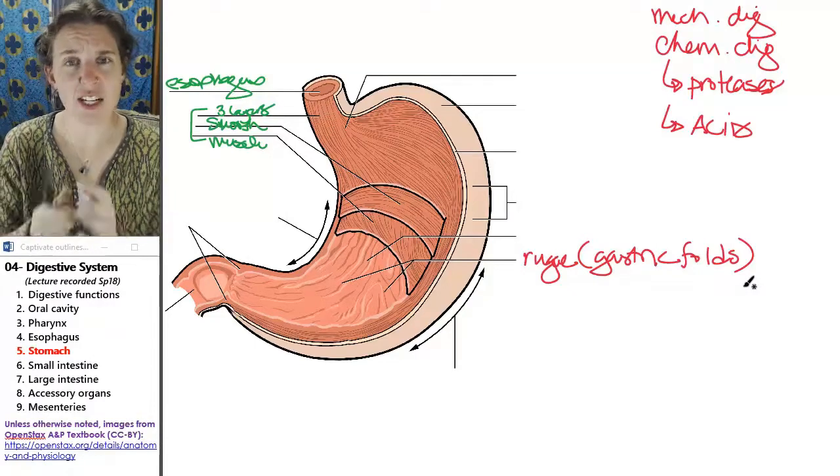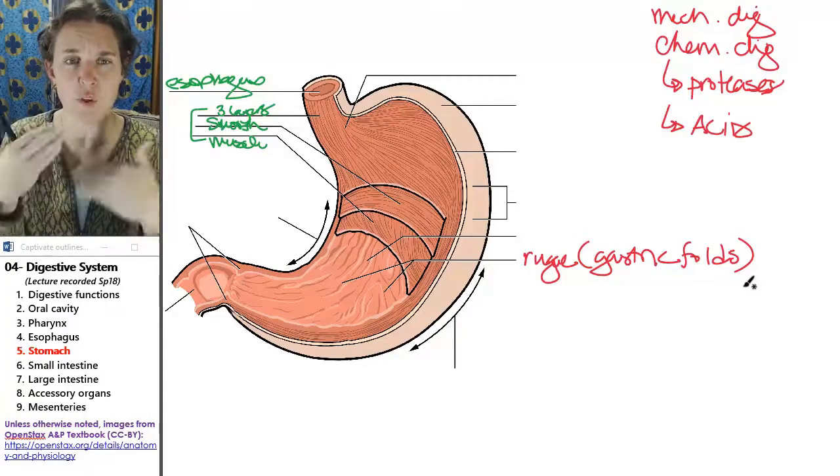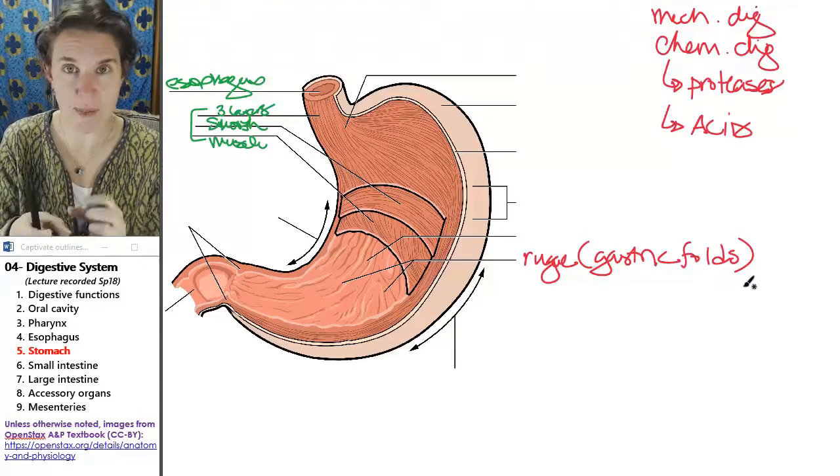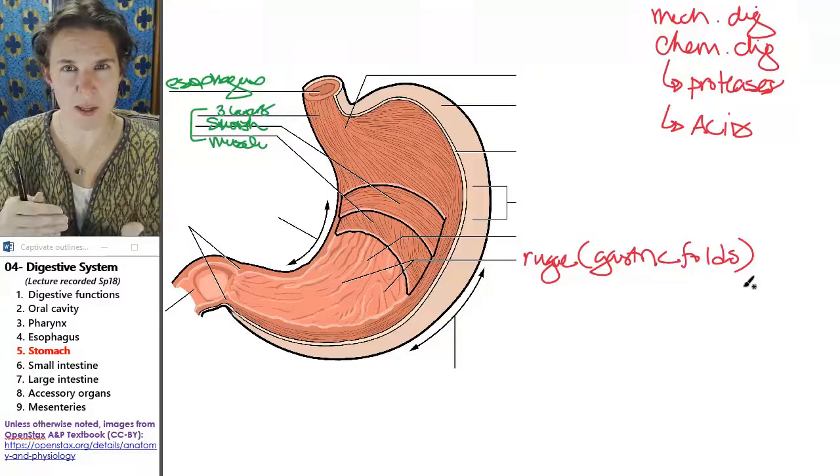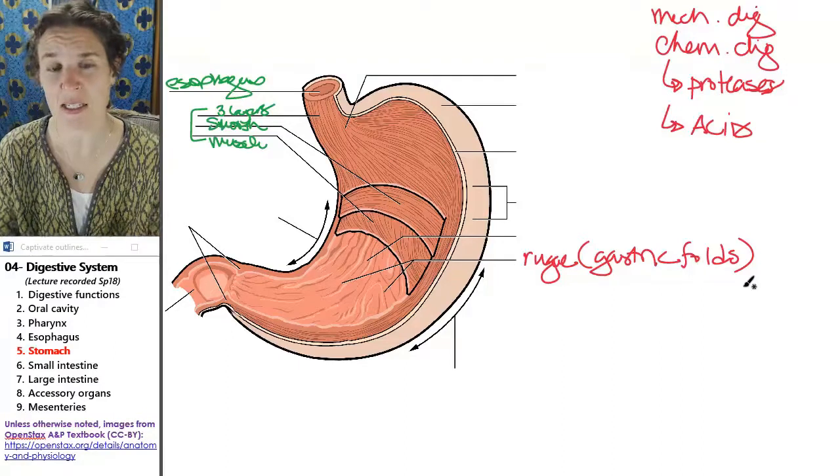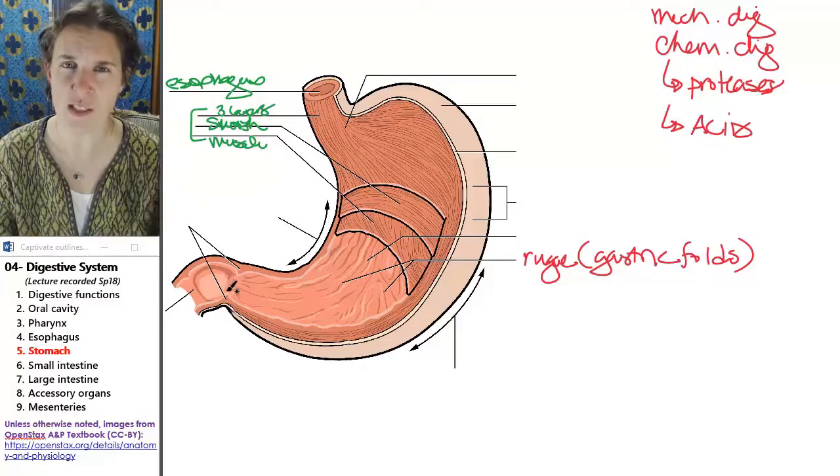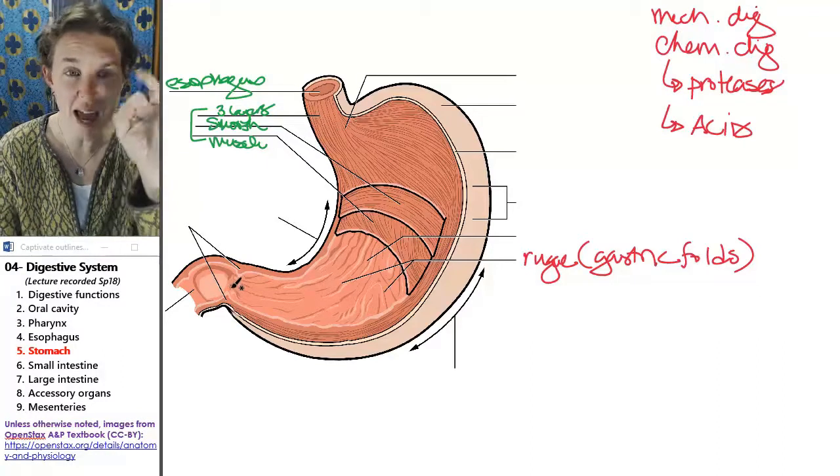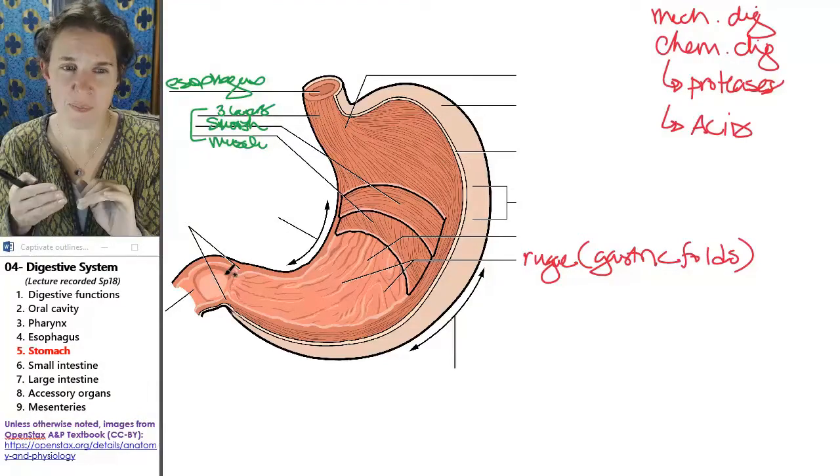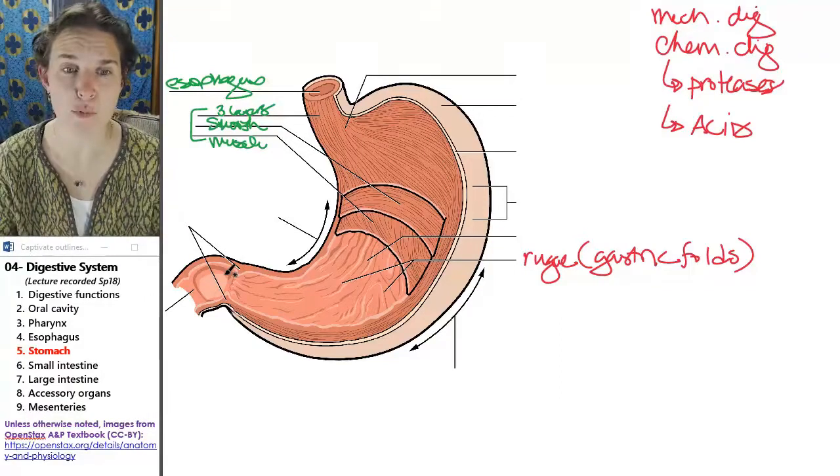The mechanical digestion happens when those muscles churn the food stuff that you stuck in there. And the more churning that happens, the more mixed up it's going to be, the more it mixes up with the fluids that are being secreted into the stomach. And you end up with this gush that then is secreted into the small intestine. And it's allowed to, in small amounts, it's allowed to go to the small intestine.